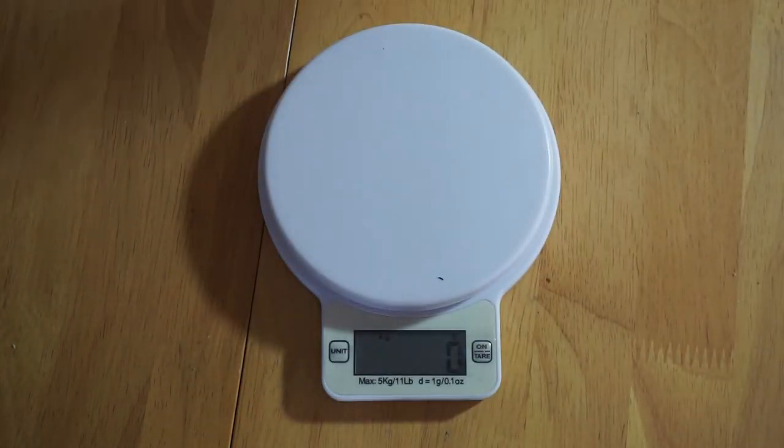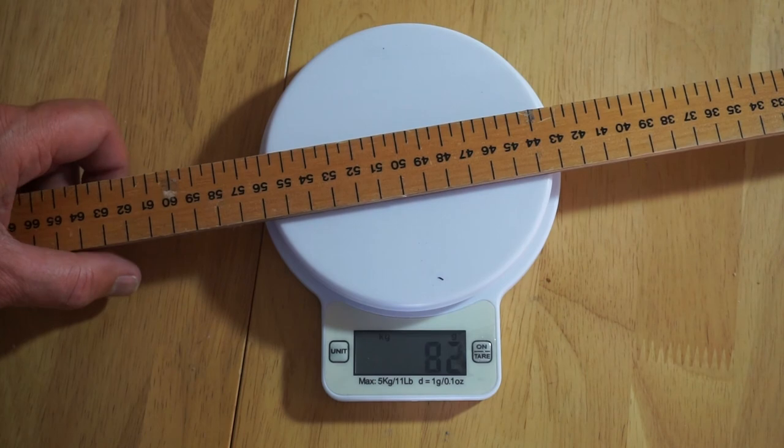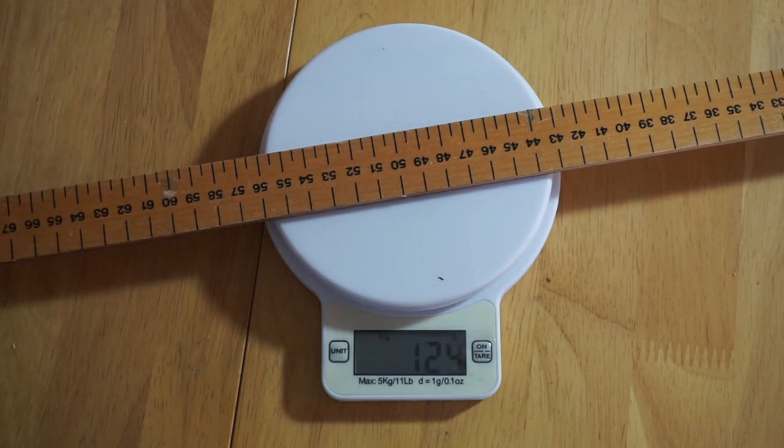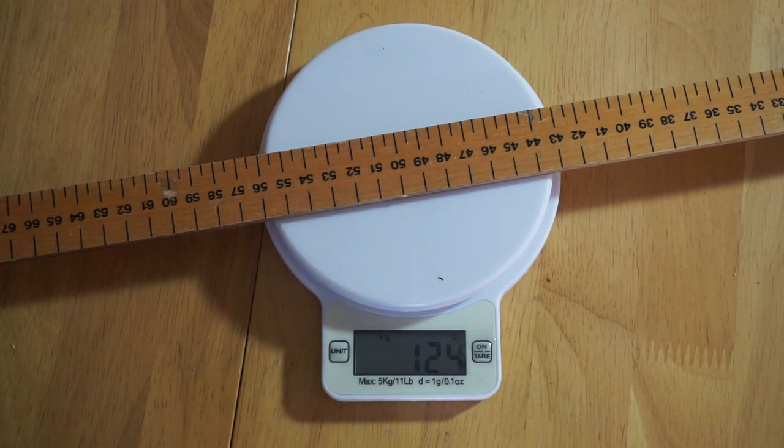I will now put the meter rule onto the scales and we can see how well we've done. It is showing 124 grams which is a difference of 6 grams from our value which is actually a very small amount indeed.